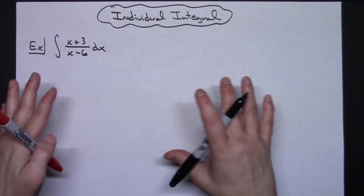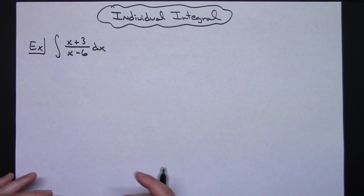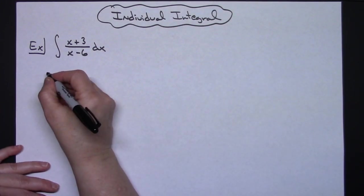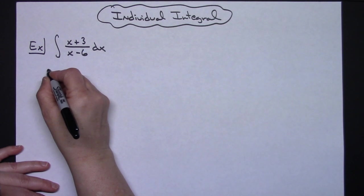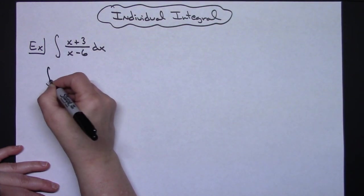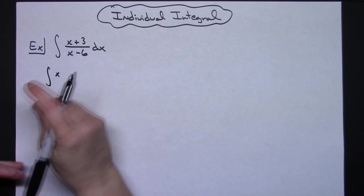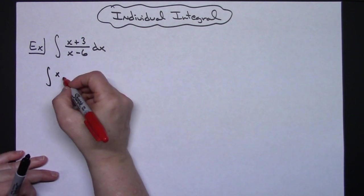And then I can separate that into two separate integrals. Okay, so this is the less intuitive way to do it, but if I looked at this as the integral of x and then I need a minus 6 to have form an x-6 over x-6 equaling 1.